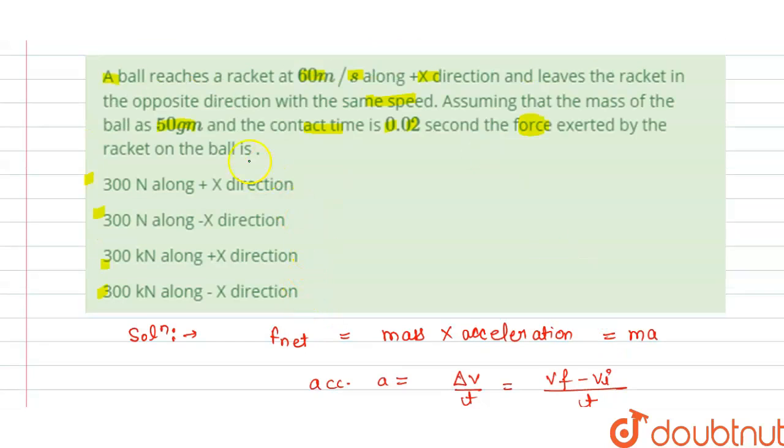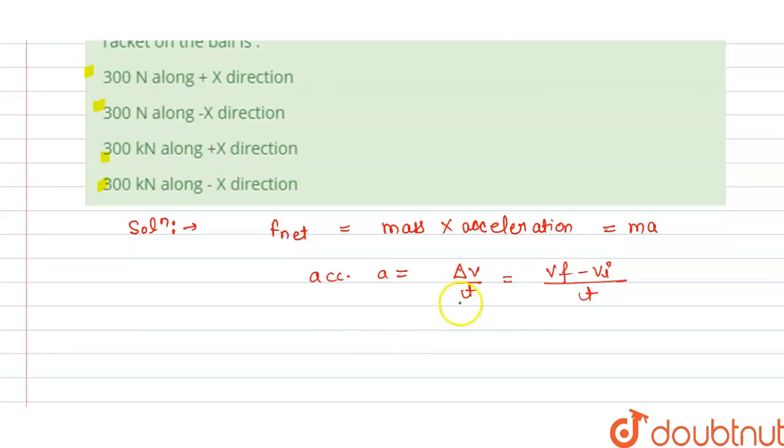It is given to us, a ball reaches 60 meter in the positive x direction and leaves the racket in the opposite direction. So we can say that final velocity is equal to, in opposite direction, minus 60 meter per second and we have the initial velocity is 60 meter per second.